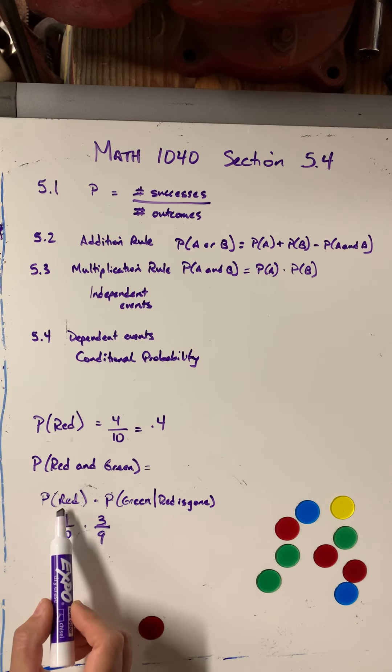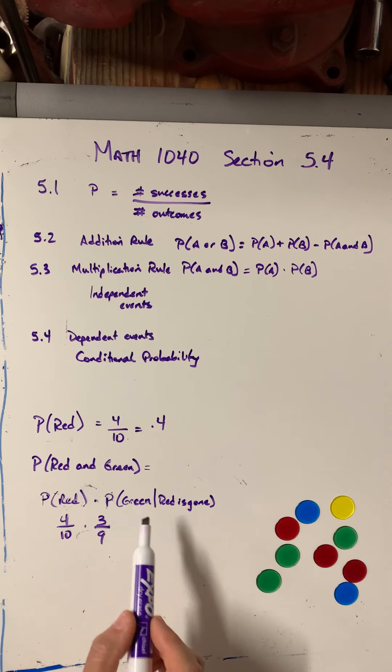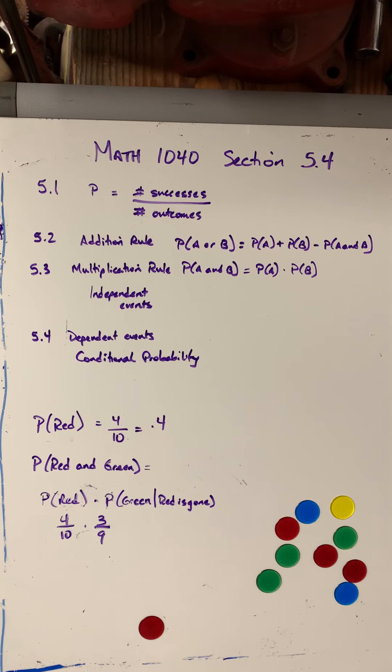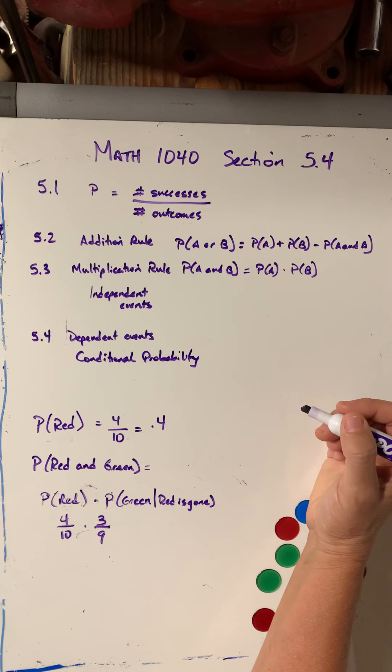So the probability of getting, I would multiply the probability of getting a red times the probability of getting a green given that the red is gone. So we develop a formula with this, which is for conditional probability.